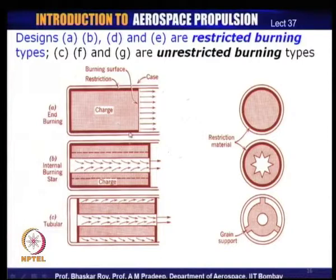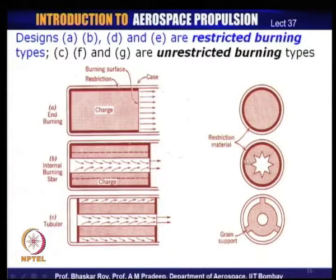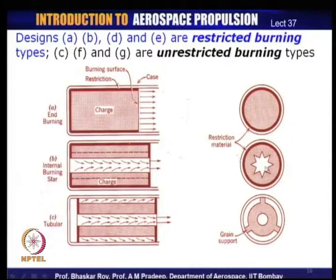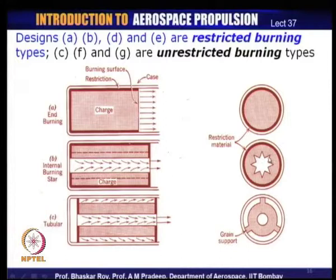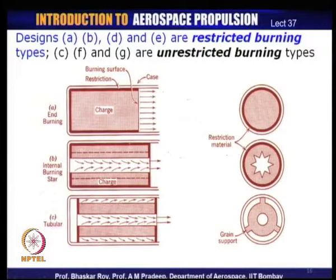In type B, only the internal star-shaped surface is open for burning. Why the star shape? Compared to a circle, ellipse, or square, a star shape has substantially more surface area, giving faster burning. The star shape is created for enhanced burning capability. Type C is unrestricted burning — more surfaces are open to burning. Three supporting structures hold the grain in place; the outer annulus and inner hole are open to burning.